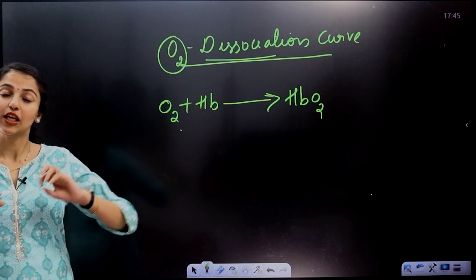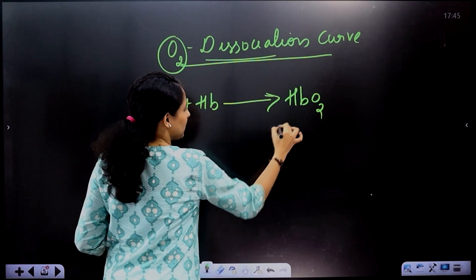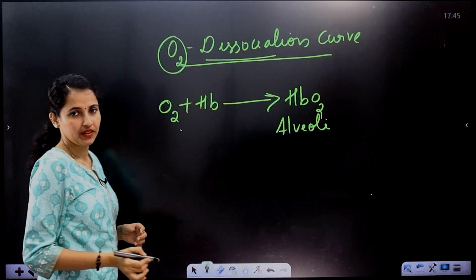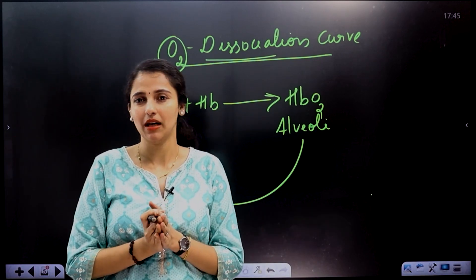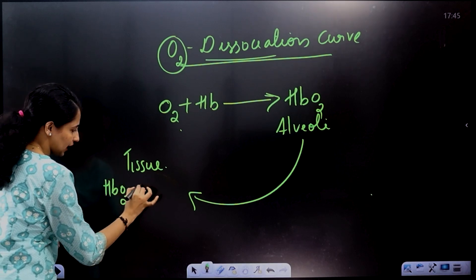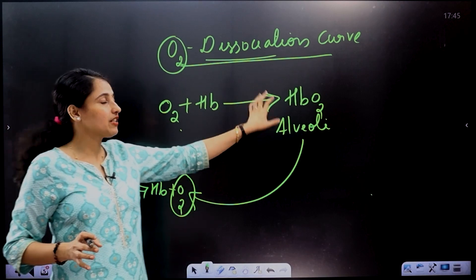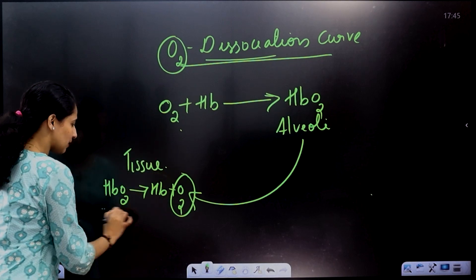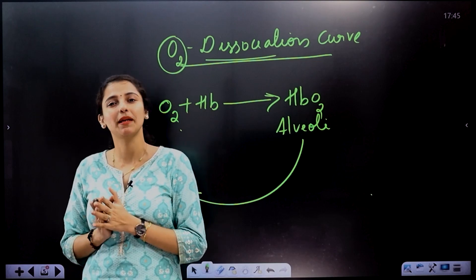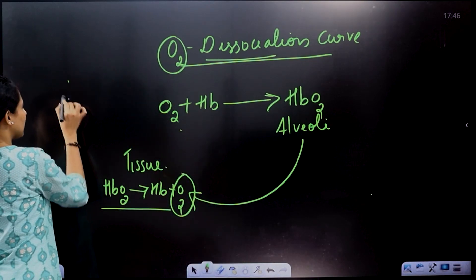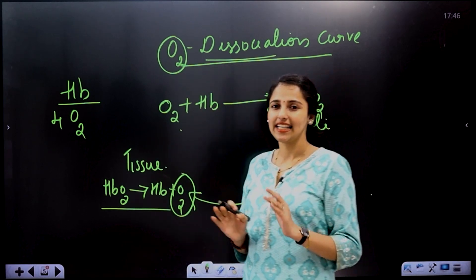In the oxyhemoglobin formula, how is oxygen delivered to the cells? At the alveoli, oxygen binds hemoglobin. At the tissues, oxyhemoglobin dissociates, releasing oxygen. This is how oxygen is combined with hemoglobin and then dissociated at the tissue level.